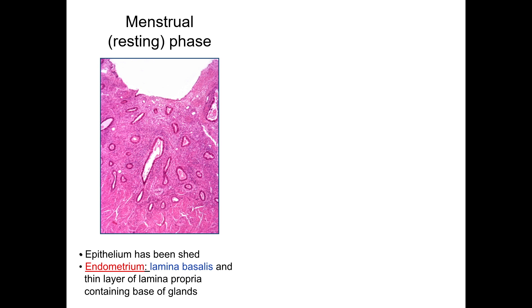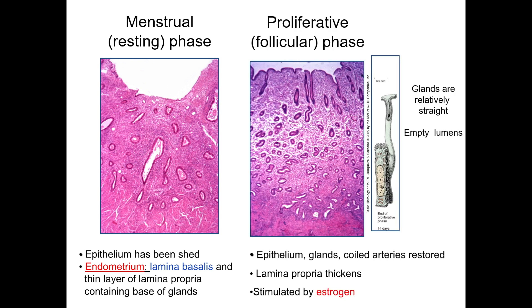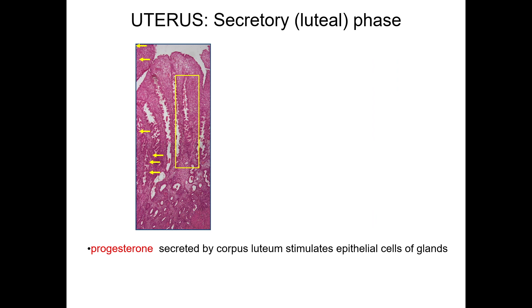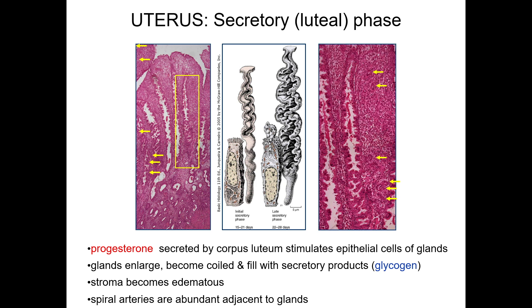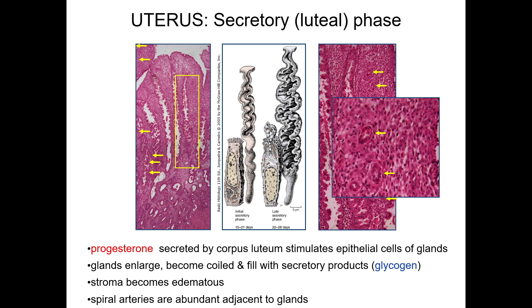Now let's look at some H&E stain sections of the endometrial phases. During the menstrual phase, we see that the functional layer has been shed, and only the basalis or basal layer with the bases of the glands remains. The next image shows the restoring of the functional layer; the cartoon illustrates the changing appearance of the uterine glands, which are now straight and have empty lumens. This phase is estrogen dependent. Finally, in the secretory or luteal phase, you can note the coiled appearance of the sacculated glands that are filled with secretory product, and we can also appreciate the spiral arteries close to the glands, shown here at low and higher magnification.